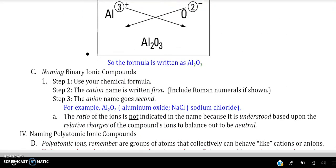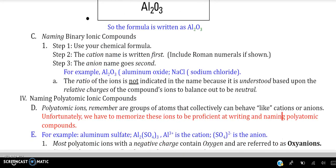So naming these, as we just saw, all you do is you name the cation first, unless it is a transition metal, then you include a roman numeral name, and then the anion second with its appropriate suffix of IDE. So we just saw aluminum oxide and sodium chloride.